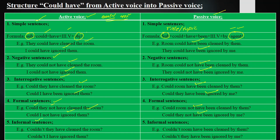Informal sentences are those in which we ask a question and deny the statement in an informal way. We use them with juniors, younger people, and friends in a friendly atmosphere. When 'could not' comes together, we change it to 'couldn't.' For example: 'Couldn't they have cleaned the room?' becomes 'Couldn't the room have been cleaned by them?' And 'Couldn't I have ignored them?' becomes 'Couldn't they have been ignored by me?'